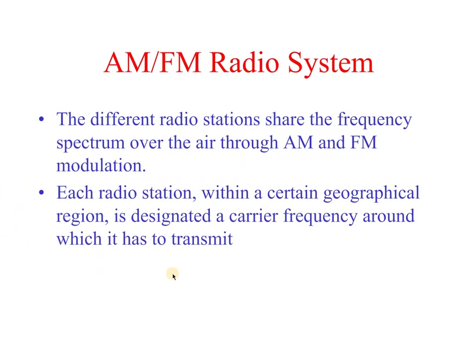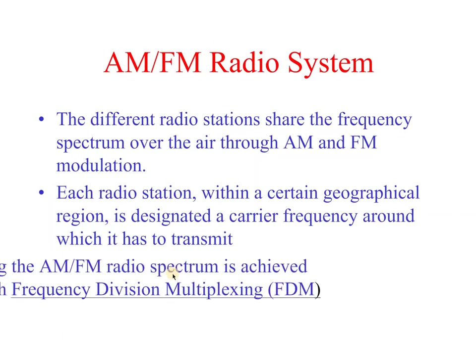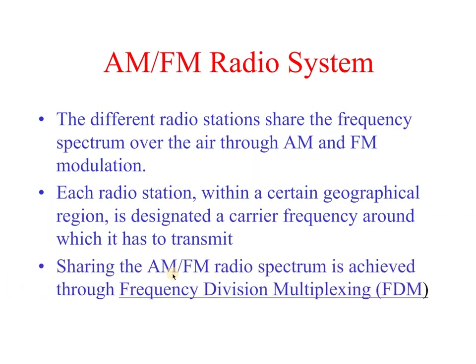The different radio stations share the frequency spectrum of the air through AM and FM modulation. Each radio station within a certain geographical region is designated a carrier frequency around which it has to transmit. Sharing of the AM and FM radio spectrum is achieved through the frequency division multiplexing technique.